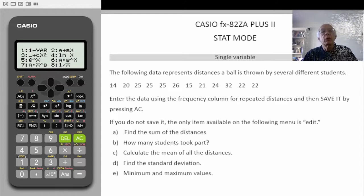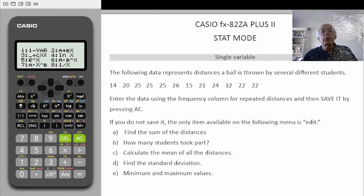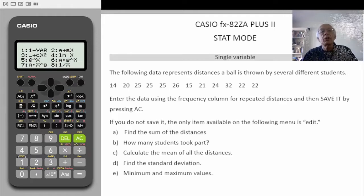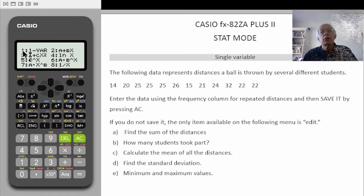Let us have a look at the question. The following data represents distances a ball is thrown by several different students. If you look at the data, you can see it is a single variable, so we need to select one — it is a single variable.